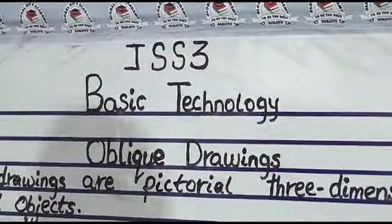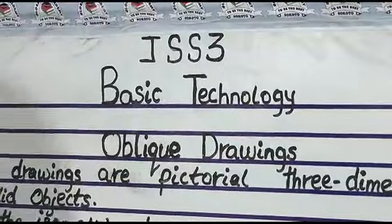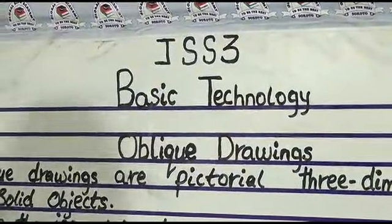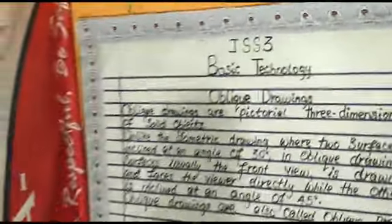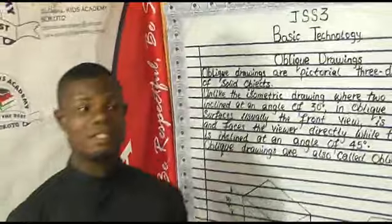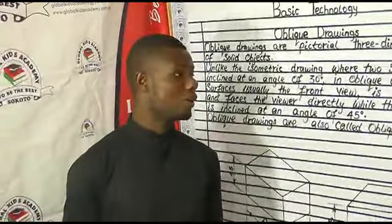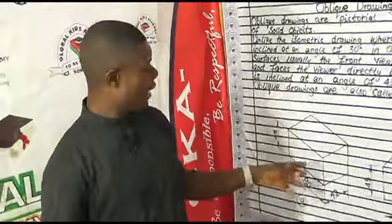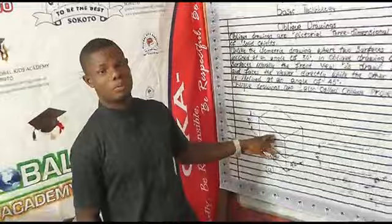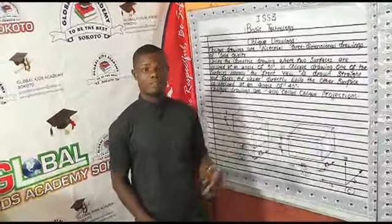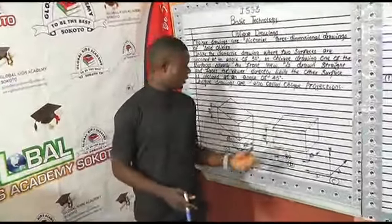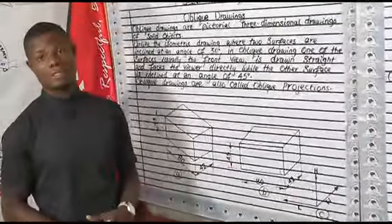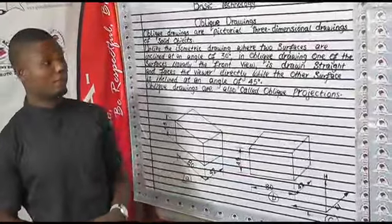At the end of this lesson, you should be able to explain oblique drawing, be able to use your instruments and material to draw an oblique drawing, and also be able to compare isometric drawing, which we did in our previous lesson, and oblique drawing together.